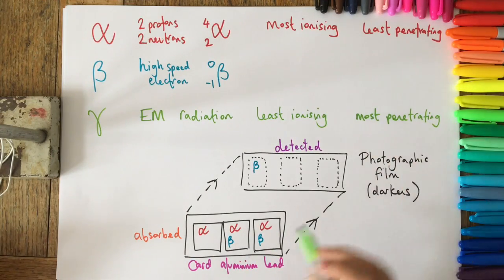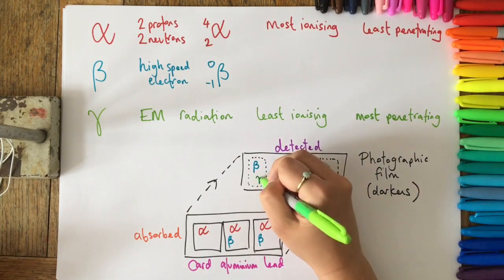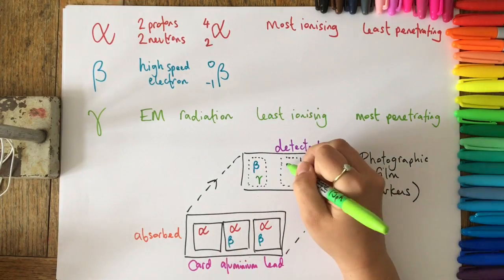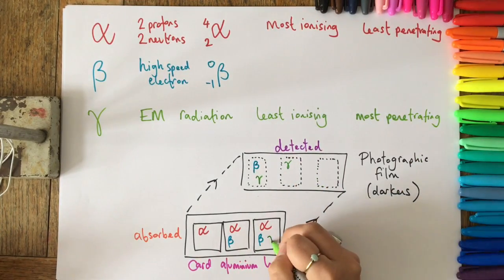Finally, gamma radiation is the most penetrating. It goes straight through card, and it will go straight through the aluminum and be detected behind those, but it will be absorbed by lead.